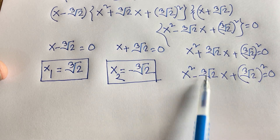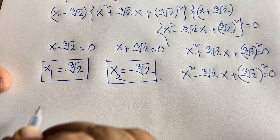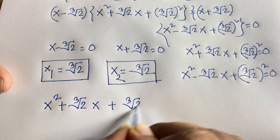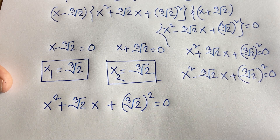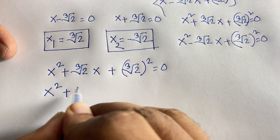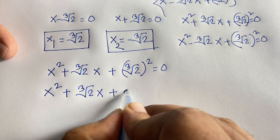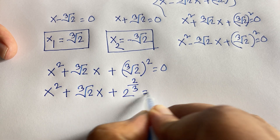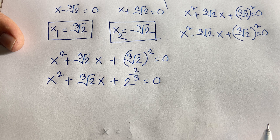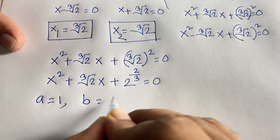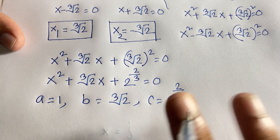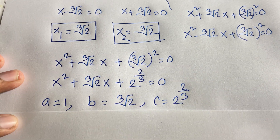For Case 3, the equation is x² + ∛2·x + (∛2)² = 0. This is a quadratic equation where (∛2)² equals 2^(2/3) by exponential rules. So: a = 1, b = ∛2, c = 2^(2/3). We'll use the quadratic formula to find x.